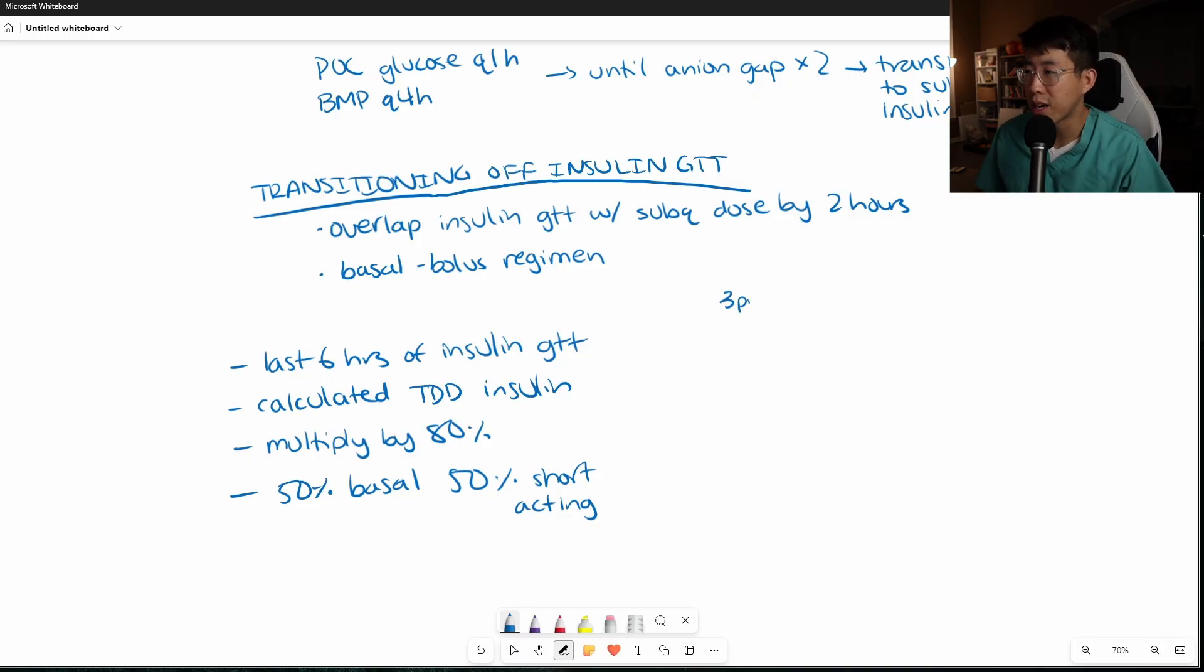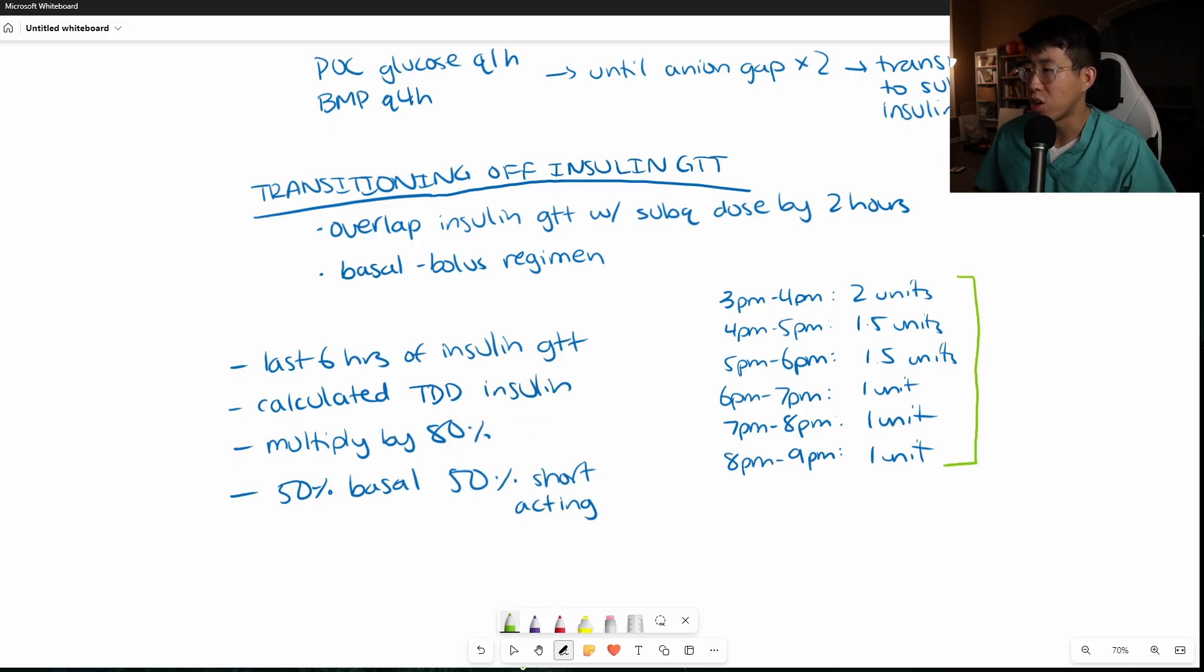So let's say from 3pm to 4pm, the patient received two units of insulin. And then from 4pm to 5pm, the patient received 1.5 units. From 5pm to 6pm, they received 1.5 units. 6pm to 7pm, they received one unit. 7pm to 8pm, one unit. And 8pm to 9pm, one unit. So that's the last six hours of their insulin drip. So what we're going to do is we're actually going to add all of these up. So 2 plus 1.5 plus 1.5 is 5 plus three more units. So that's eight units.